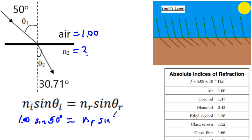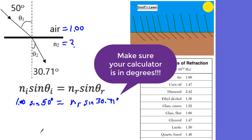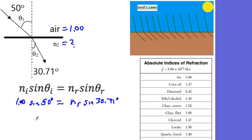And you can see when we do this on a calculator, we're going to do 1 times sine of 50. Sine of 50 is going to be .766 on this side, equals NR, sine of 30.71. That is going to give us .5107.